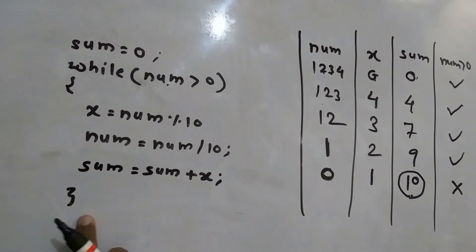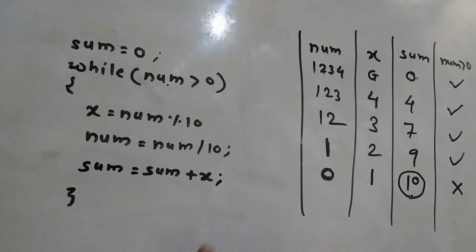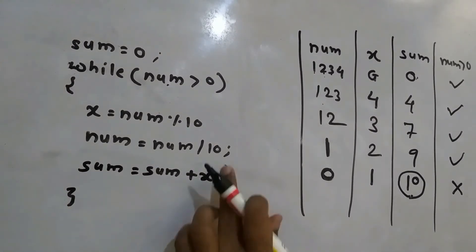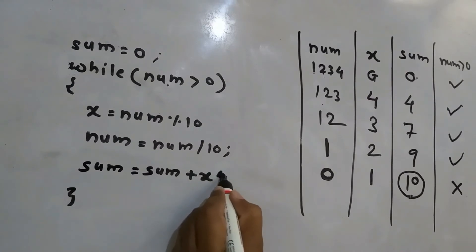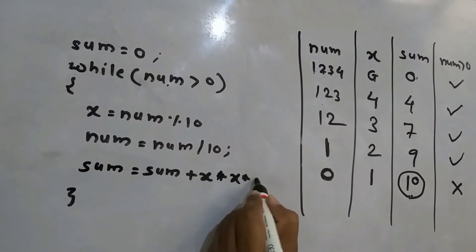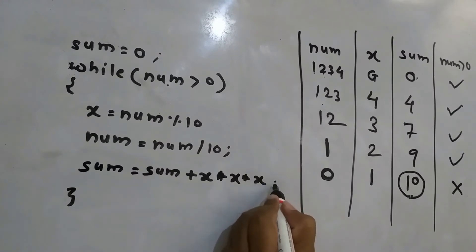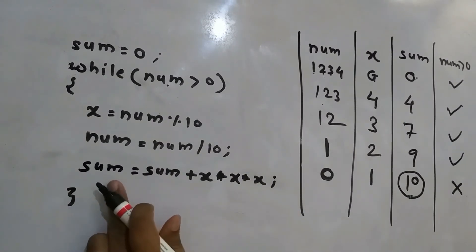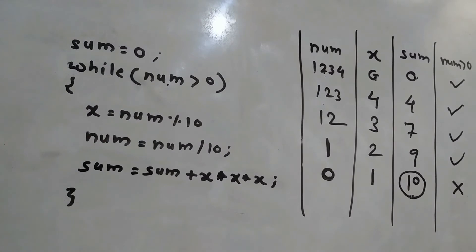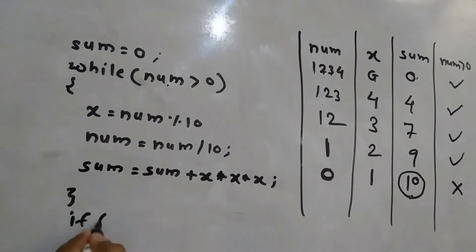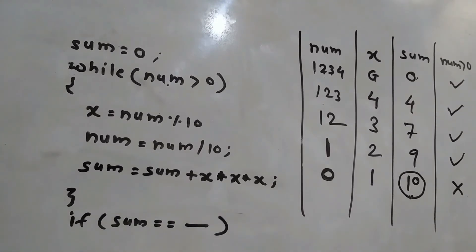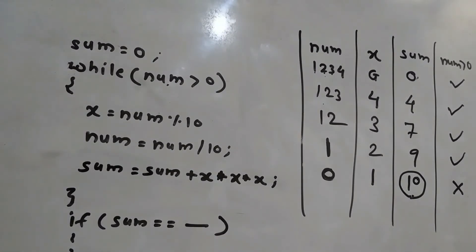But my program needs to check whether the user-entered number is Armstrong or not. So I will make one small change: instead of sum of digits, I now want the sum of cubes of each digit. So instead of writing sum equals sum plus x, I will write sum equals sum plus x*x*x. Then I will compare that sum with the original number — if they are equal, print 'Armstrong number'; otherwise, print 'not an Armstrong number'.